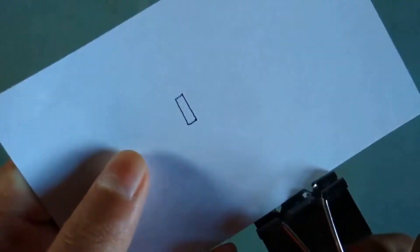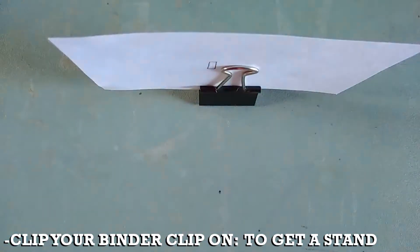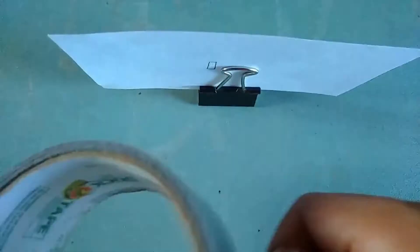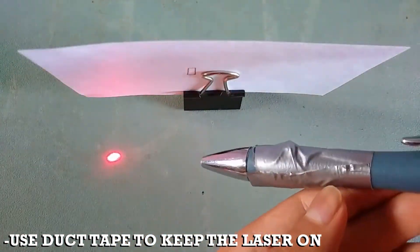Then, you take your binder clip and clip it on to get a sort of a stand. Now, use duct tape or whatever to keep the laser on so that you don't need to keep holding that button down.